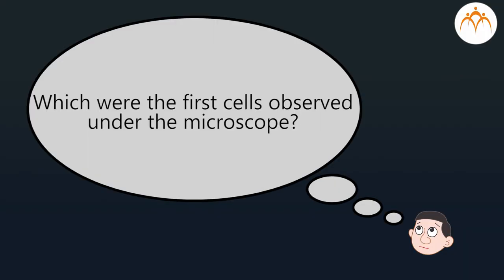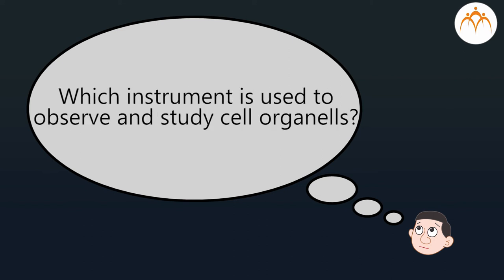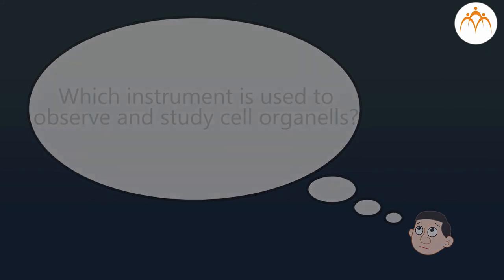Can you find answers to the following questions? First, which were the first cells observed under the microscope? Second, what units are used to measure the size of cells? Third, which instrument is used to observe and study cell organelles? I am sure you will easily find the answers when you read the chapter from your textbook. In the next session, we will discuss types of cells and microorganisms.